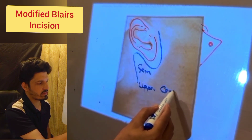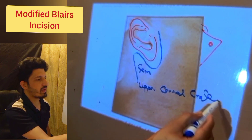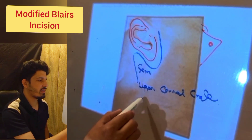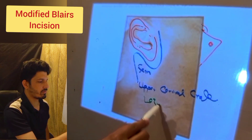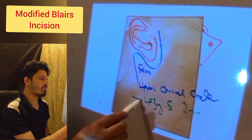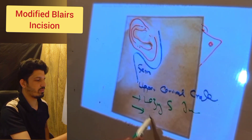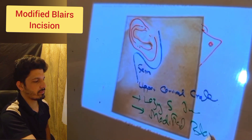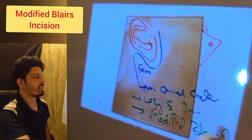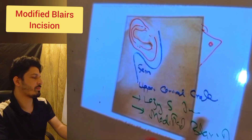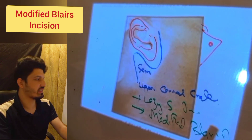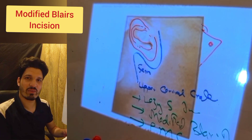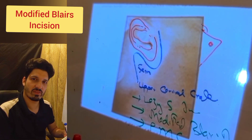This is the upper cervical crease. This incision in CN is also known as the Lazy S MCN. Another name is Modified Blair's MCN. It is also known as the Pre-auricular Mastoid and Cervical MCN — in short, PMC. That covers everything about this incision in CN.